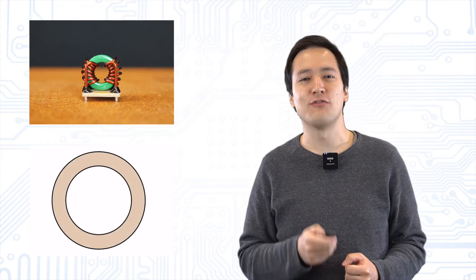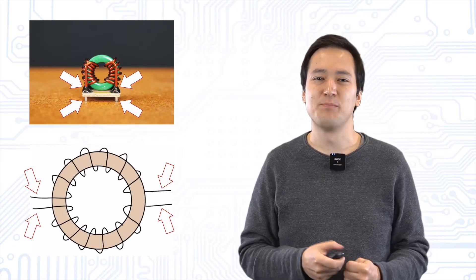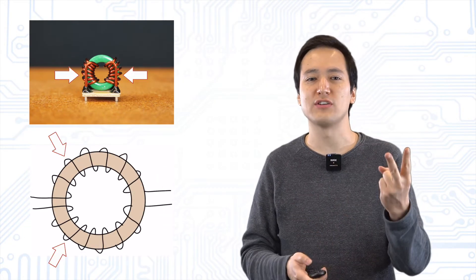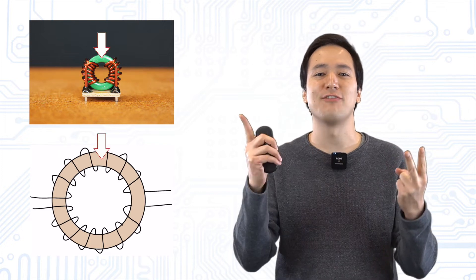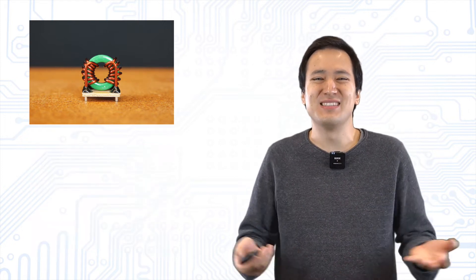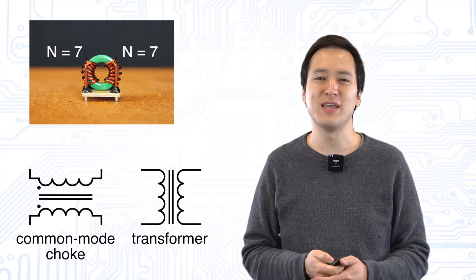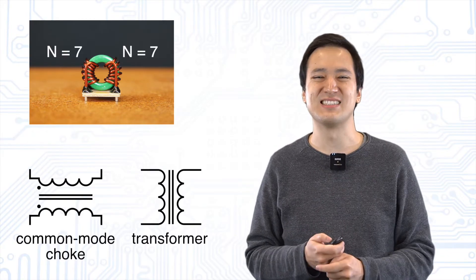It looks a bit complicated at first with its four connections, but it consists of only two wires wound around a single ferrite core. So it's basically a transformer with the same number of windings, but we use the connections differently.